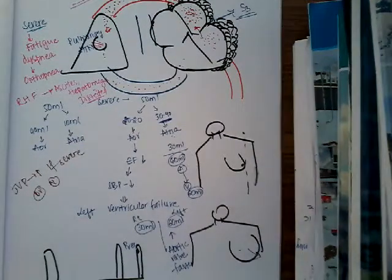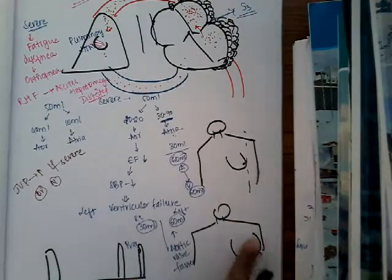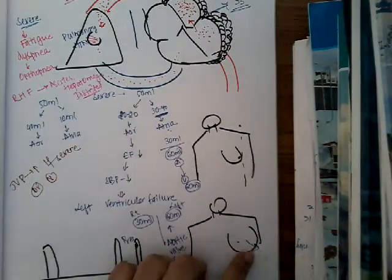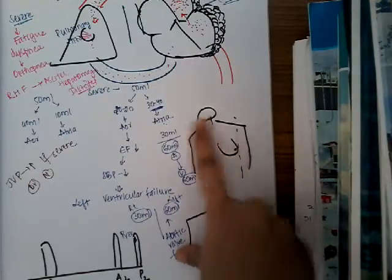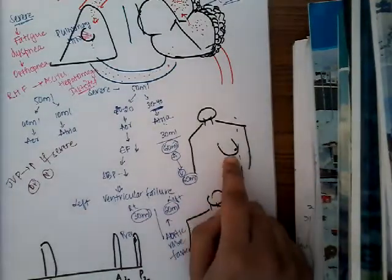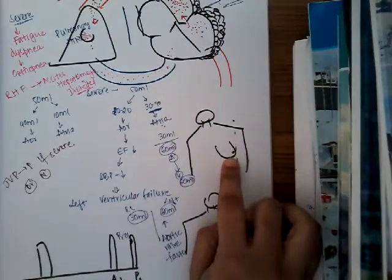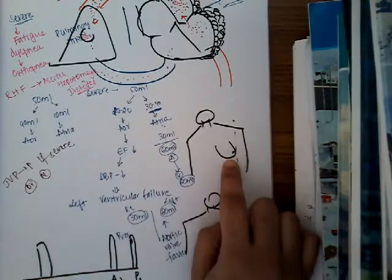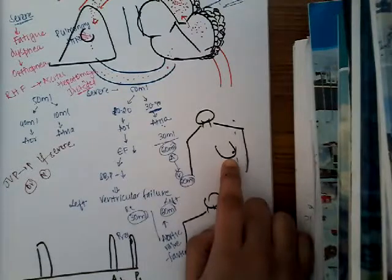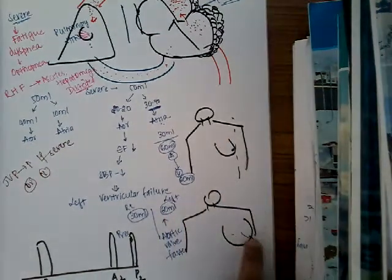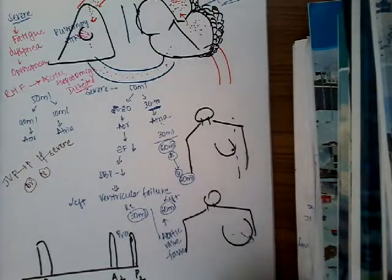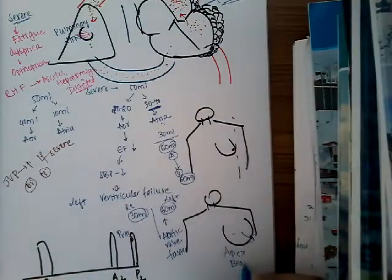On systemic examination, on inspection, if the person is lean you can find the apex beat. The apex beat is displaced downwards and to the left. Normally it is in the fifth intercostal space, left side, half an inch medial to the mid-clavicular line. But here, because of left atrial dilatation and hypertrophy, the apex beat is shifted downwards and laterally. This is one important finding.